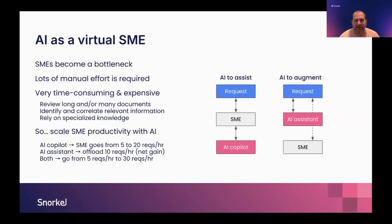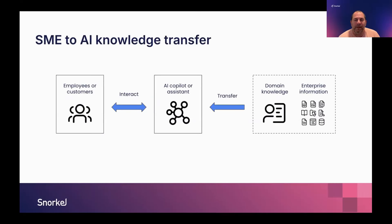Pilots and assistants tend to be the first step to using generative AI to improve productivity. The challenge is: how do we transfer all that domain knowledge — whether it's in PDFs or in relational databases — into that AI co-pilot or assistant so it can provide high-quality, accurate responses?